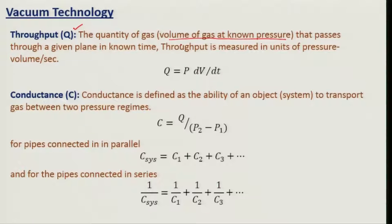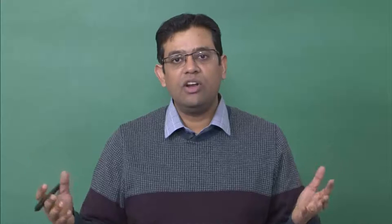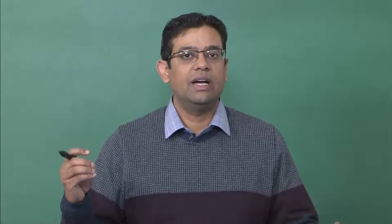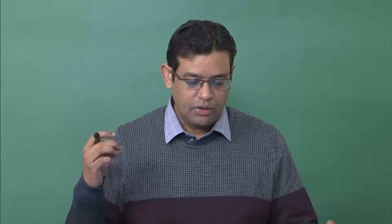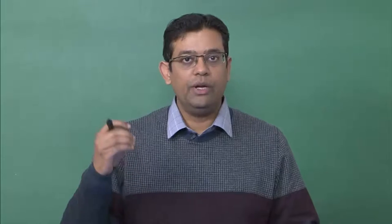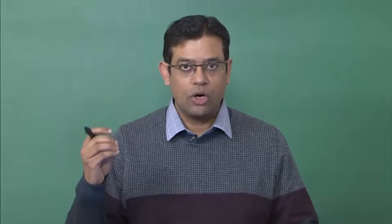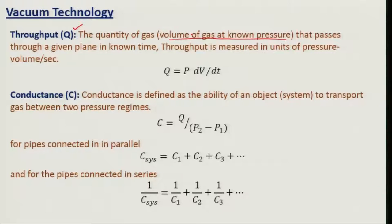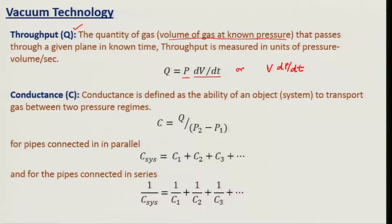Throughput is defined as volume of gas at known pressure because gas will occupy any volume you keep it in. So volume alone is not the exact measure of the quantity of gas — pressure times volume, P×V, is the quantity of gas. Throughput can be defined as Q = P × dV/dt at fixed pressure, or equivalently as V × dP/dt at constant volume.